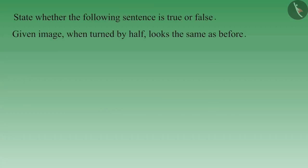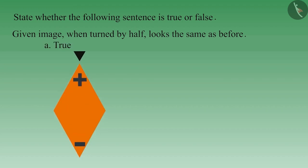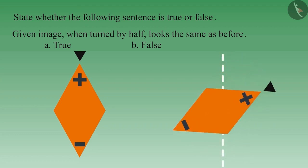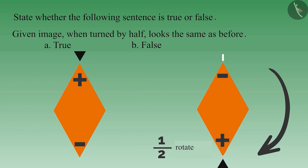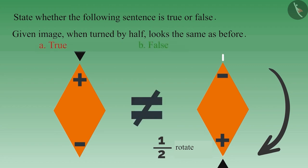State whether the following sentence is true or false. The given image looks the same as before when turned by half. If you consider this statement true, then you must be thinking that on turning the image by half, it looks like before. But you are not paying attention to the symbols on the image. If we turn the image by half, the position of the symbols will change. On turning by half, this image does not look the same as before. Therefore, this statement is false.